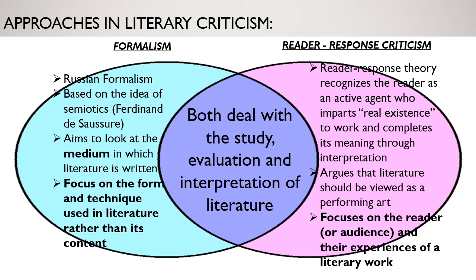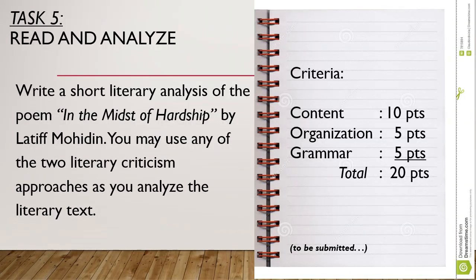After understanding the two literary criticism approaches, write a short literary analysis on the poem In the Midst of Hardship by Latif Muhyiddin. You may use either of the two literary criticism approaches. You will be rated based on the following criteria: content of your analysis — 10 points; organization — 5 points; and grammar — 5 points. This has to be submitted.